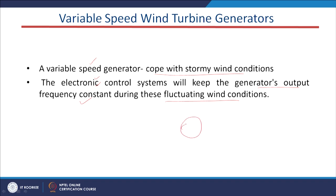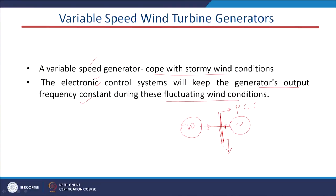When the wind generating system is connected to the grid, we have to maintain the frequency and voltage at the PCC (point of common coupling) at a constant, desirable level — at the nominal values. For that purpose this electronic control system helps to maintain this frequency and voltage at the desired values.